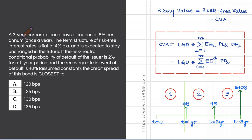We are given that a three-year corporate bond pays a coupon of 8% per annum, paid once a year. The term structure of risk-free interest rates is given to be flat at 4% per annum, assumed to be annually compounded, and interest rates are expected to stay unchanged in the future.